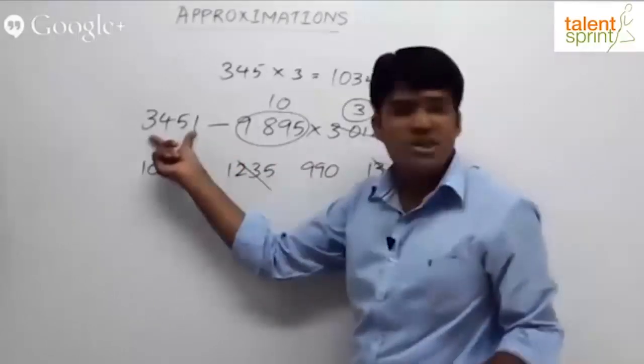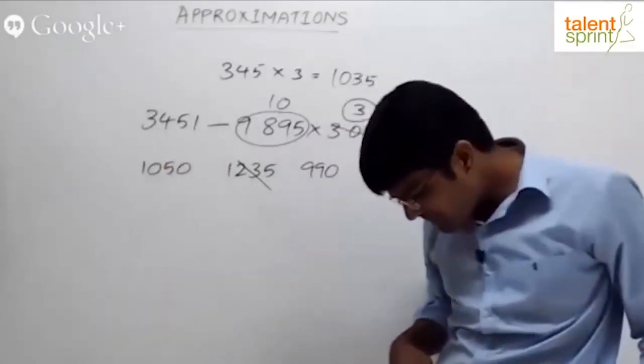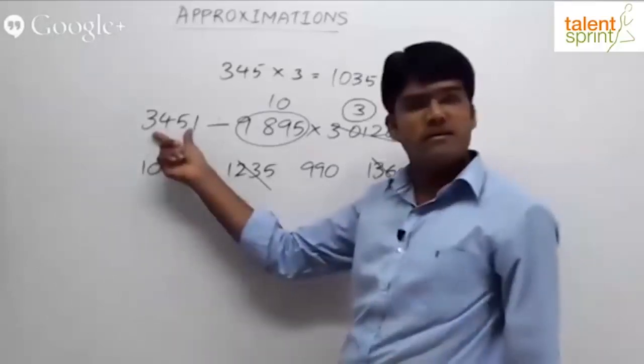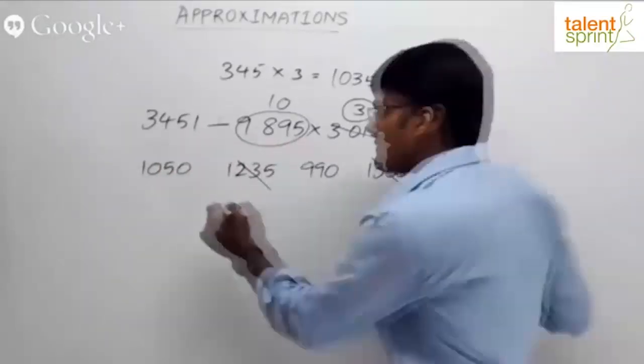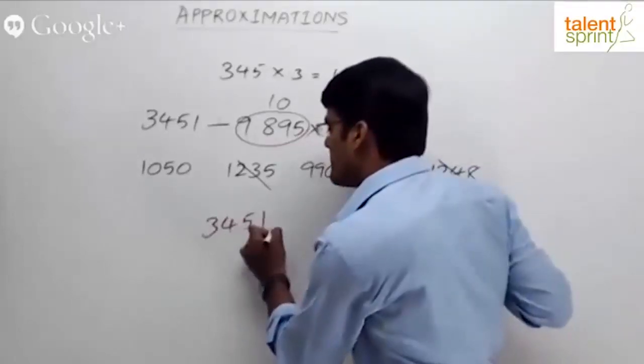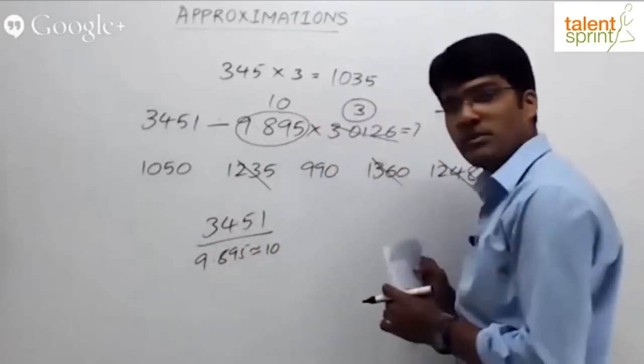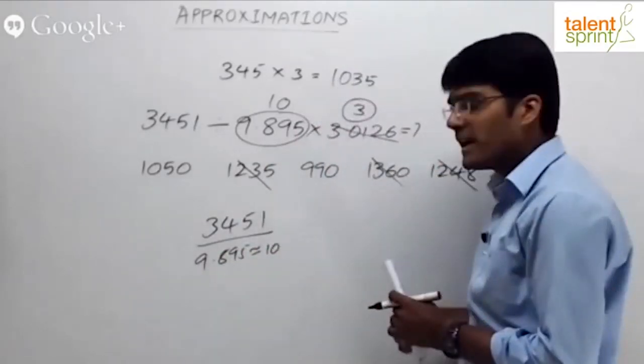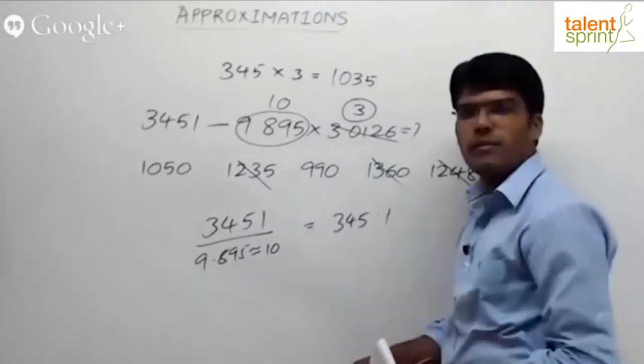Now look at this. We did not change this value. 3451 was 3451 as it is. 3451 was taken as 3451, but 9.895 was approximately taken as 10. When we approximately take it as 10, we have got the answer as 345.1 or 345 approximately.